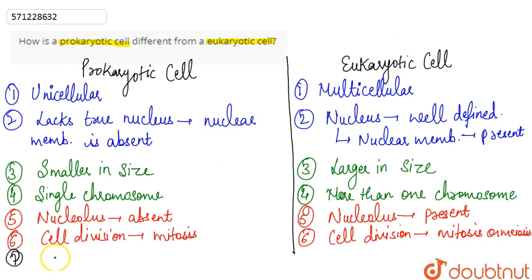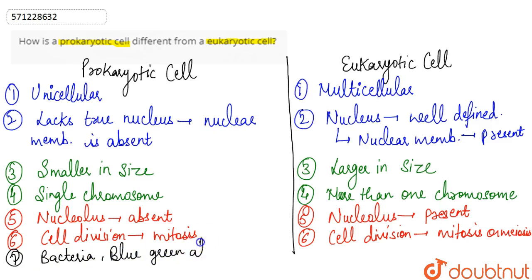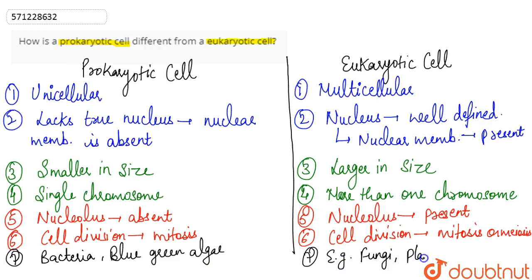Prokaryotic cells are found in bacteria and in blue-green algae, whereas eukaryotic cells are found in fungi, plant cells, and animal cells.